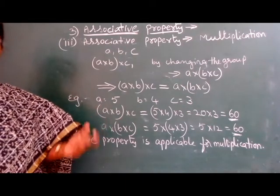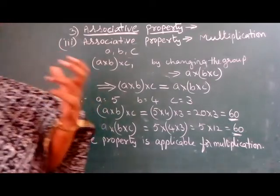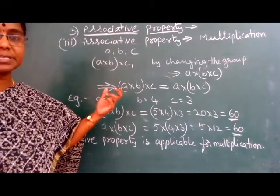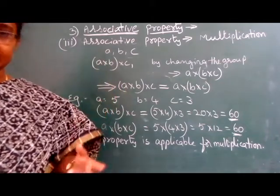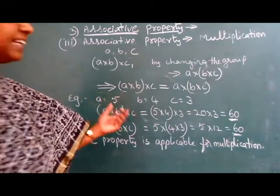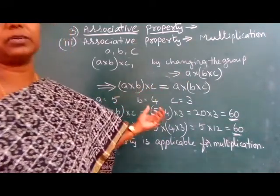It states that if you wish to multiply any two or more numbers, doesn't matter how you will change the group. But the result will be equal.